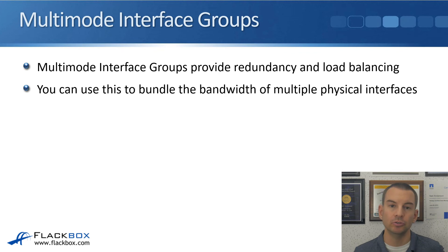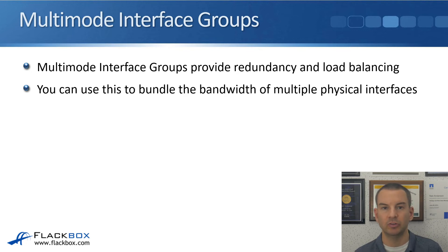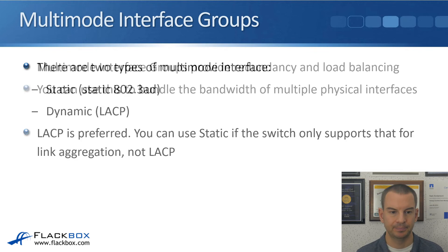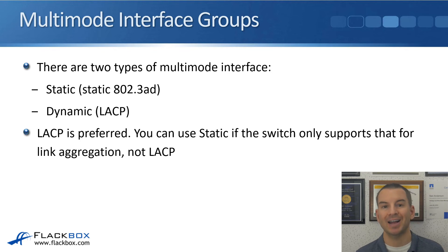The other type you may want to use is multi-mode interface groups, which are active-active, providing both redundancy and load balancing. Multi-mode bundles the total aggregate bandwidth of your multiple physical interfaces together. There are two types: static (802.3AD) or dynamic, which uses LACP. LACP is the newer protocol and is preferred. You can use static if the switch supports static but not LACP.